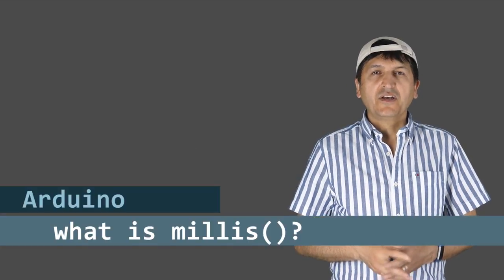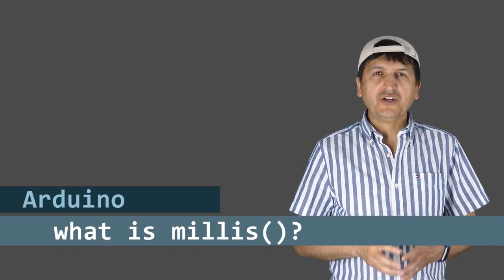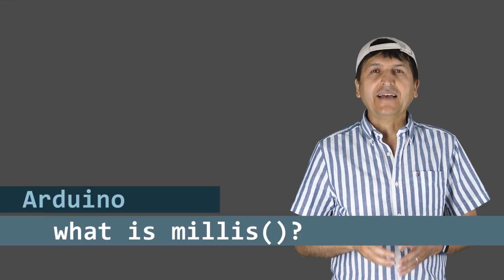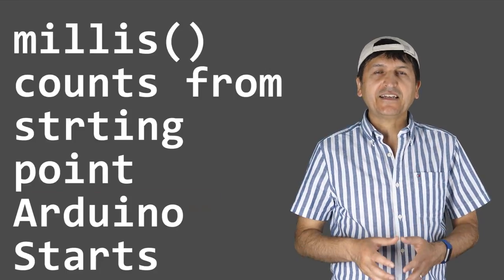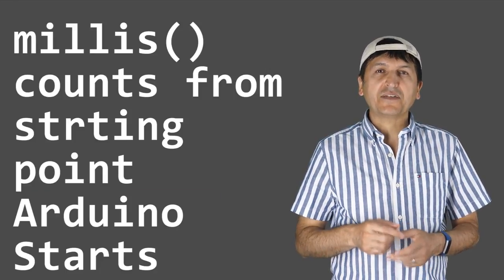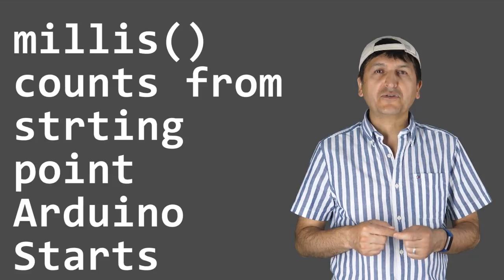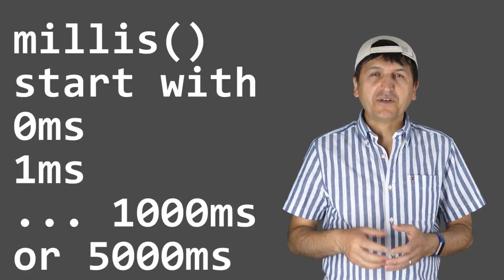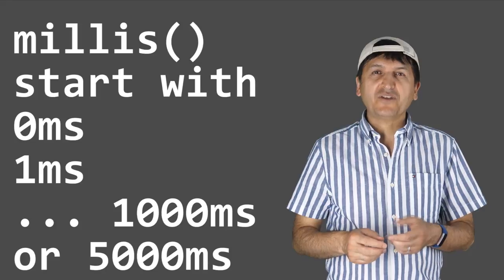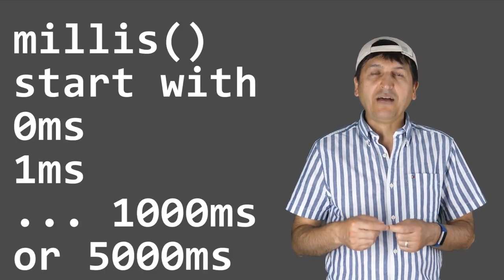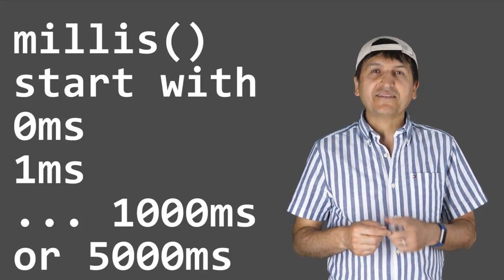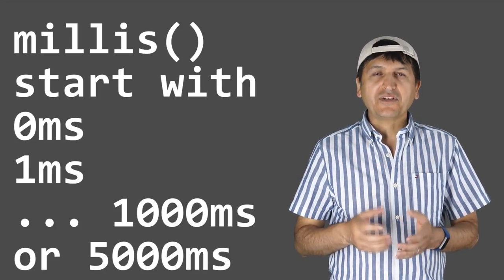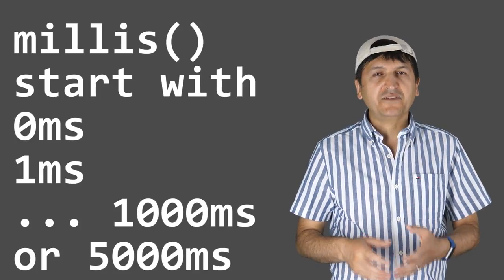So what is millis and why do we use it? Millis is an internal Arduino function that calculates the time in milliseconds from the starting point when the Arduino program runs. As soon as you power up the Arduino, millis starts at zero and increments every millisecond — for one second you read 1000, for five seconds you read 5000, and so forth.